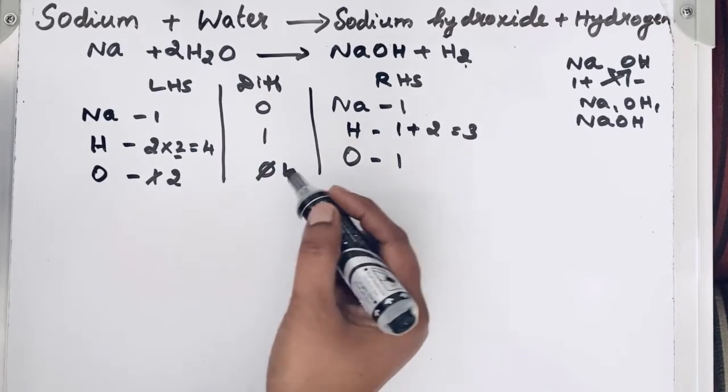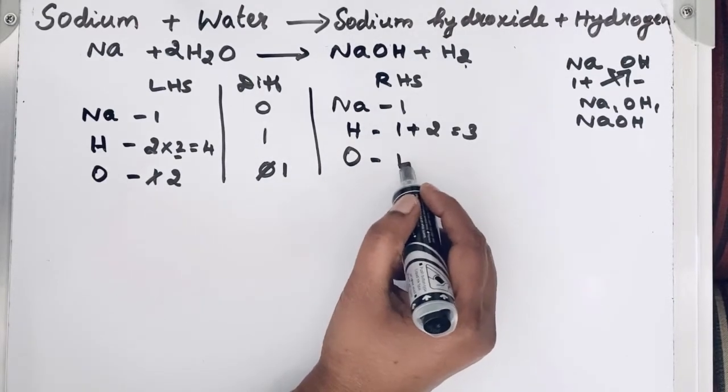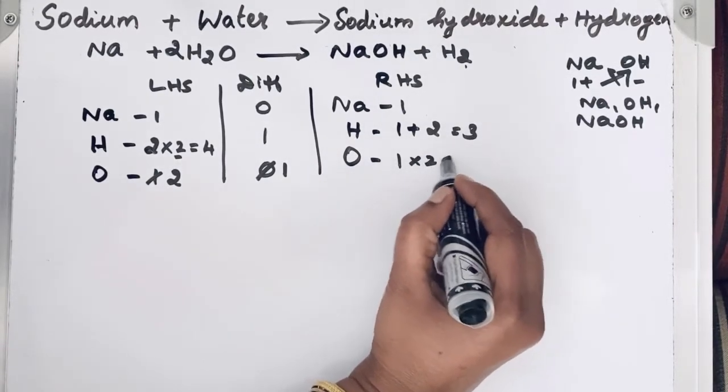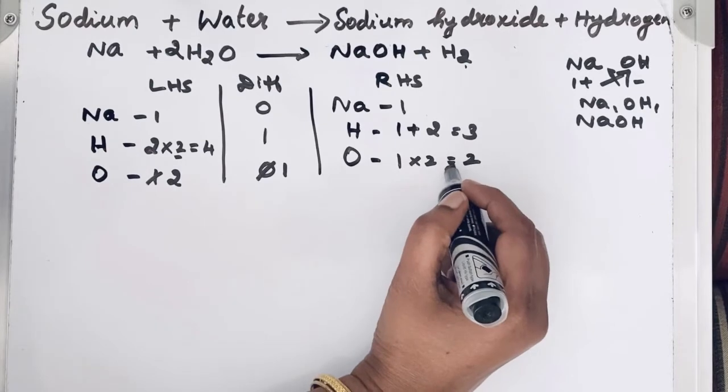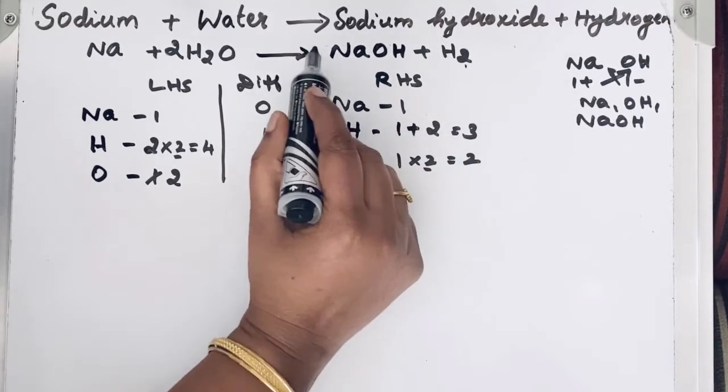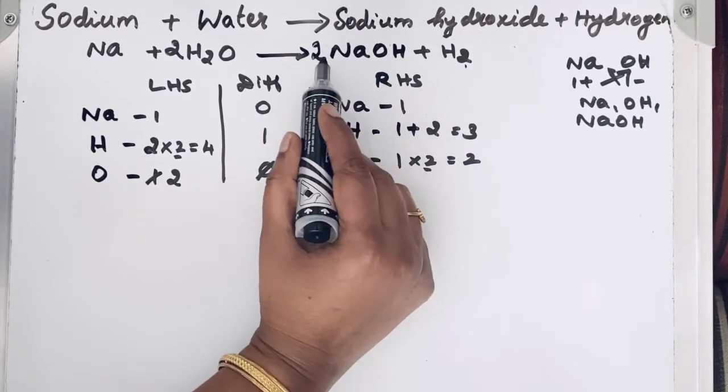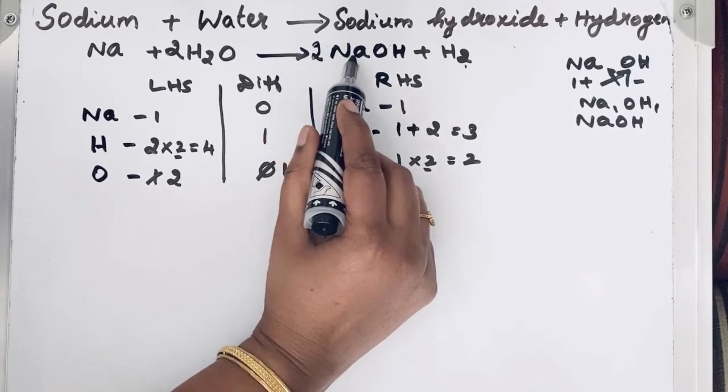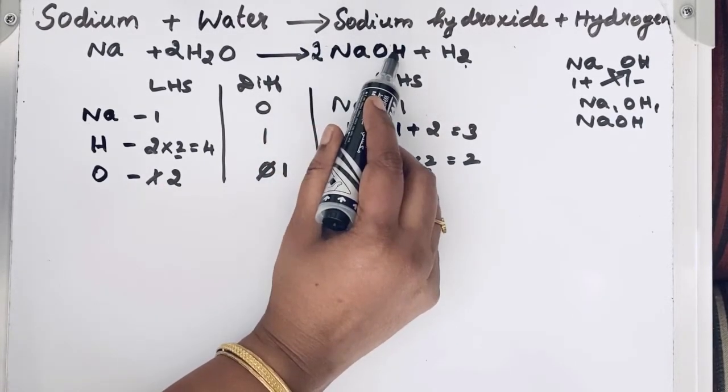So to balance that oxygen, let us multiply with 2 here. So this 2, we will, as a coefficient, we will put in front of NaOH. Now you see, number of sodium also changing, number of hydrogen atom also changing.